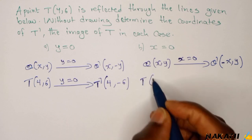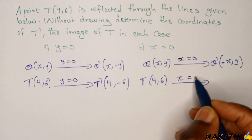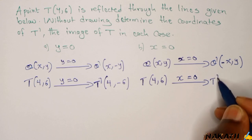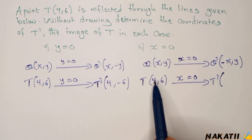So in our case here we have point T which is (4,6). So if you reflect it on line x equals 0, which is the y-axis, your image, which is T prime, will be...